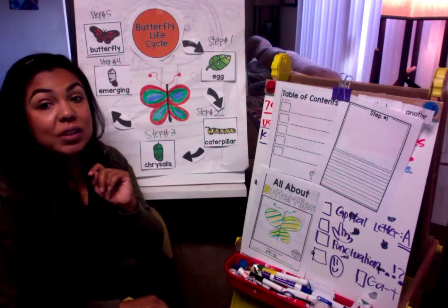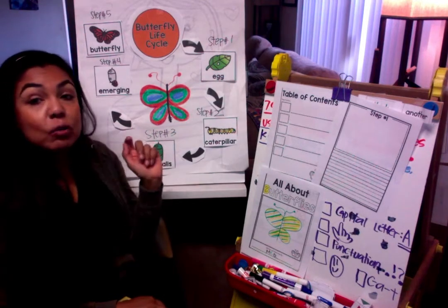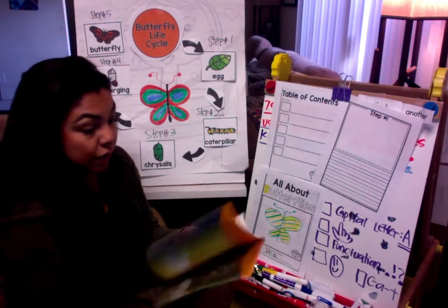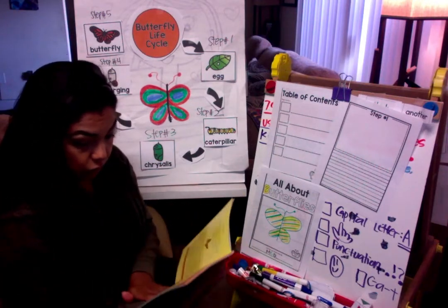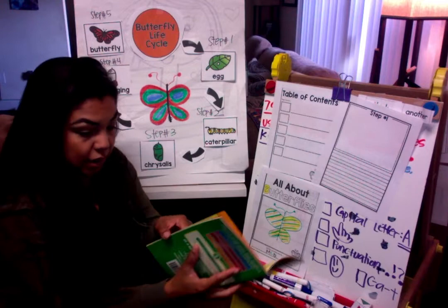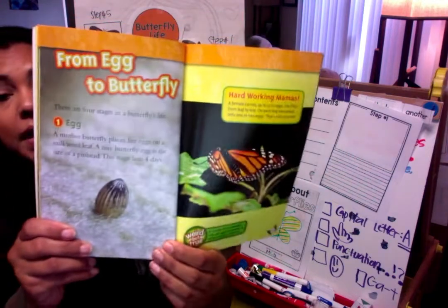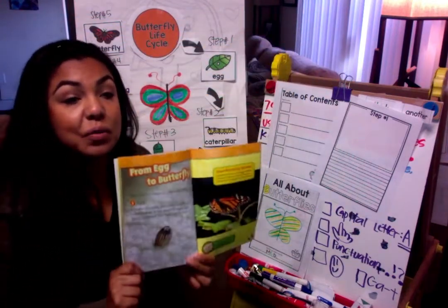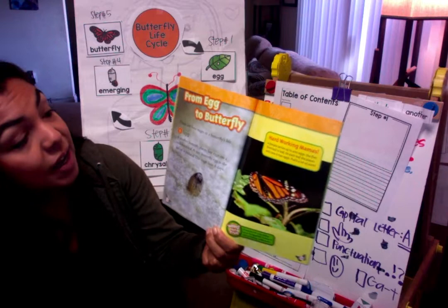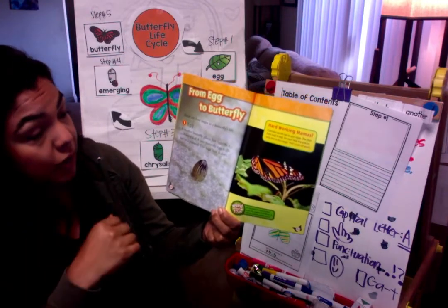Today we are going to explore step number one. Step number one is the egg — just like we learned in our book, butterflies begin their life cycle with an egg. If we go to our table of contents in the book on page 30, it says 'From Egg to Butterfly.' I will send you the book so you can follow along. The book lists four stages, and we'll talk about why we split it into five in just a few minutes.